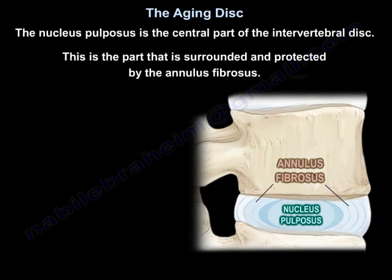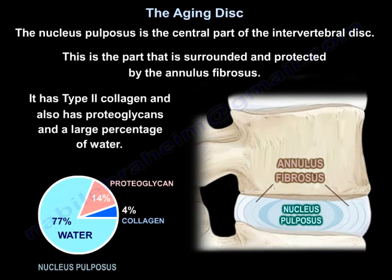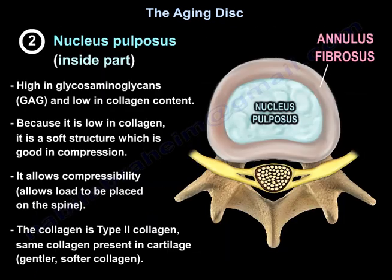The nucleus pulposus is the central part of the intervertebral disc, surrounded and protected by the annulus fibrosis. It has type 2 collagen, proteoglycans, and a large percentage of water. The nucleus pulposus is high in GAG and low in collagen, making it not a hard structure but a soft one that is good in compression, allowing compressive loads to be placed on the spine.